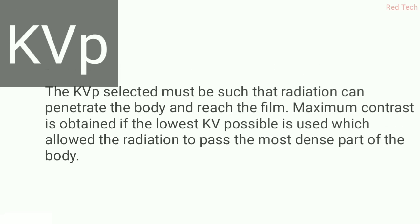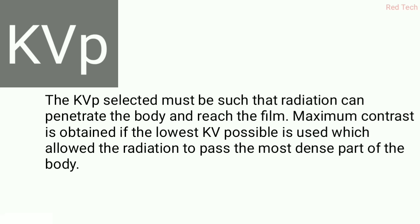Next is kVP — kilovoltage peak. This is basically selected to allow radiation to penetrate the body and reach the film. It mainly impacts penetration power. Maximum contrast is obtained when the lowest kVP possible is used, as it allows radiation to pass through the most dense parts of the body.